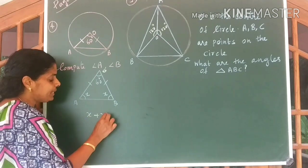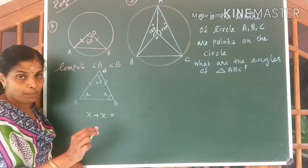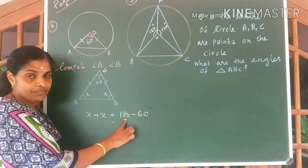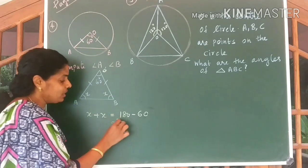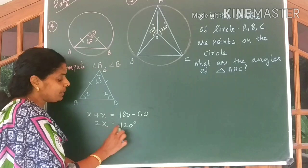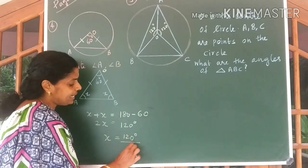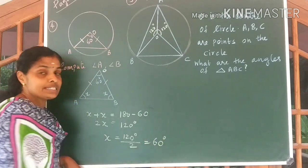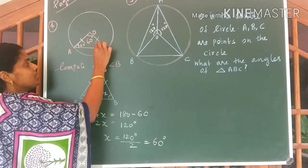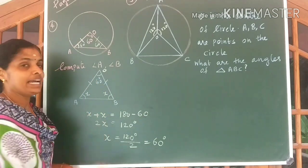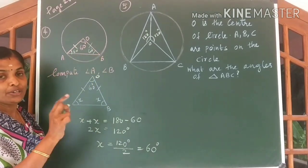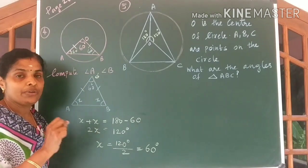What do you know about X plus X? X plus X equals 180 minus 60. 180 is the sum of all angles of the triangle, from which I have subtracted 60 degrees, so you get 120 degrees. Therefore X equals 120 divided by 2, which is equal to 60 degrees. So angle A equals 60 degrees and angle B also equals 60 degrees. That is the answer for the fourth question. Since all angles are equal, you can call OAB to be an equilateral triangle.